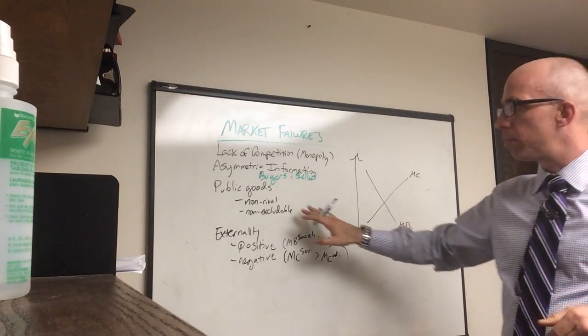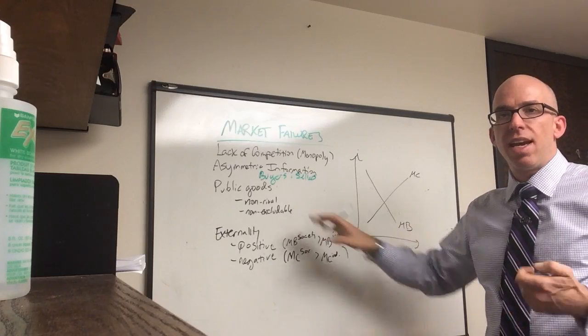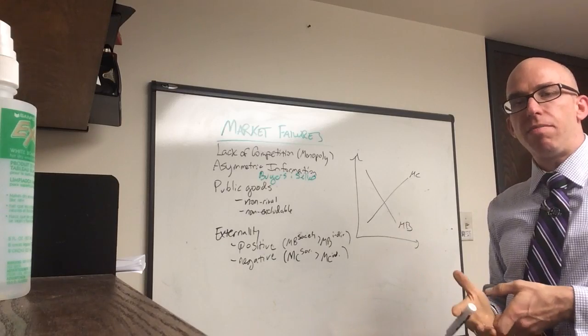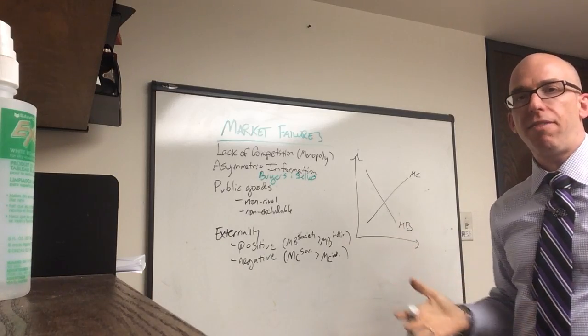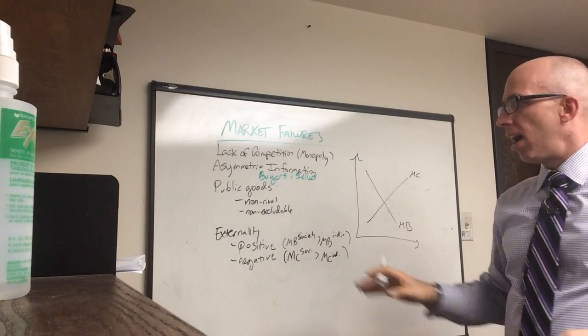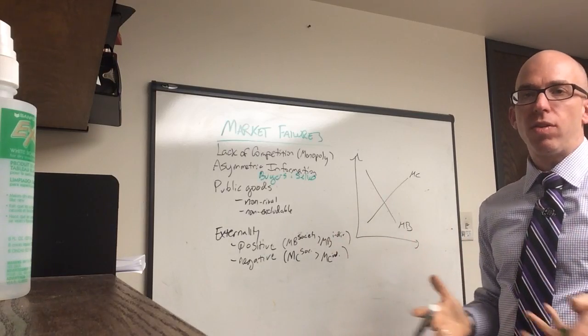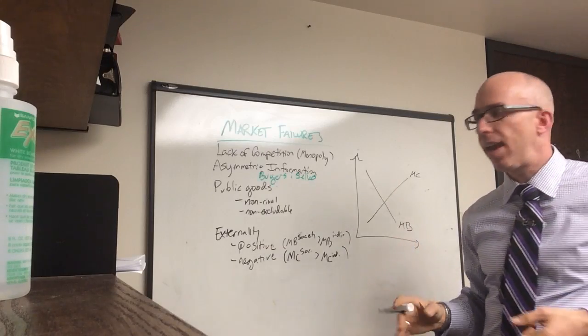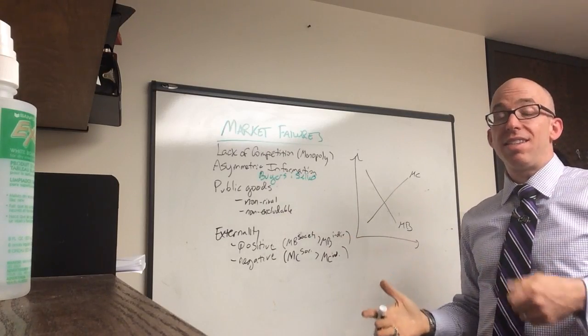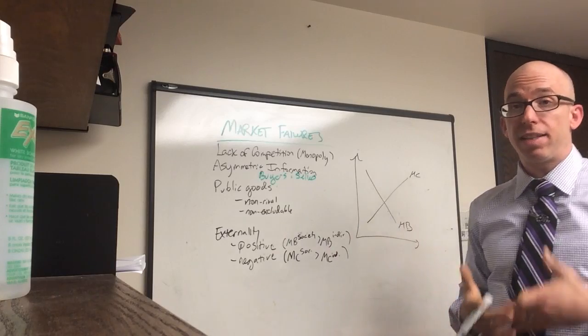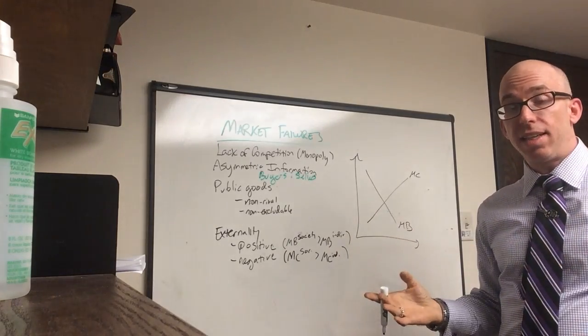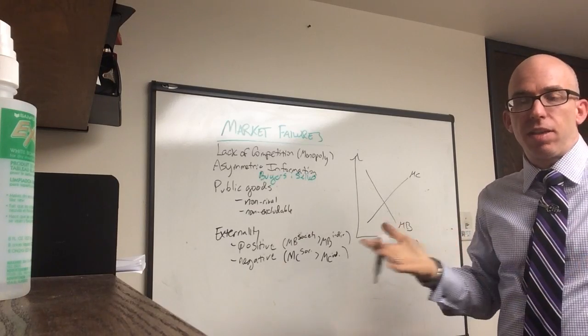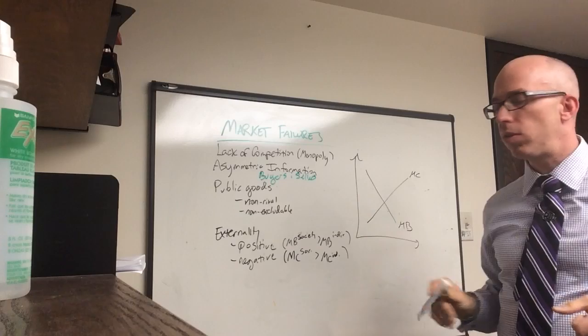A classic example is military protection for a country. There's no way for one person to not pay their military bill and then be subject to be the only person invaded if the country were invaded. Everybody or nobody, it's either one or the other, and so there's no way to bill people because there's no way to punish them for not paying. Likewise, one person being protected does not take away protection from the other. In fact, if everybody's protected everybody's protected. If one person is not going to be invaded in America the other 300 million people won't be either. So it's actually jointly consumed.